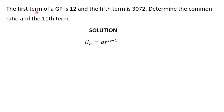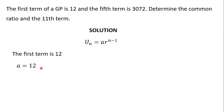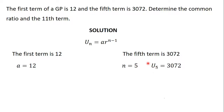We have been told in the question that the first term of the GP is 12. From this formula, we know that the first term is given as a. So, if the first term of the GP is 12, then a is equal to 12. We also know from the question that the fifth term of the GP is 3072, so u₅ is equal to 3072, and n is equal to 5.